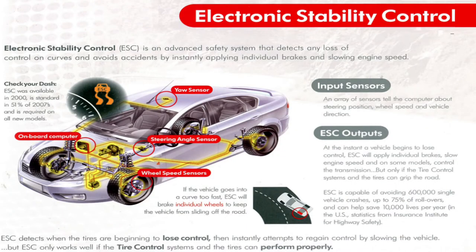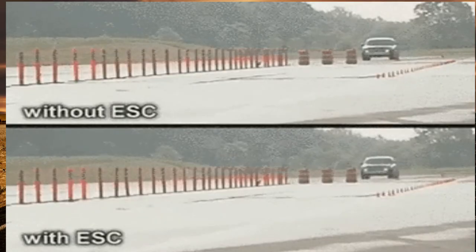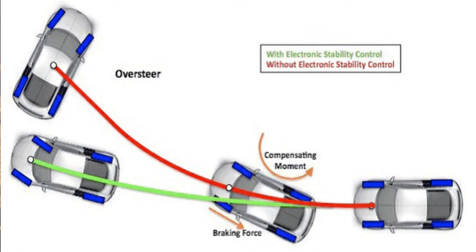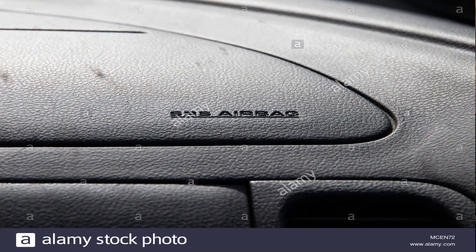Yet another feature is Electronic Stability Control — ESC — also referred to as Electronic Stability Program (ESP) or Dynamic Stability Control (DSC). This computerized technology improves a vehicle's stability by detecting and reducing skidding. When ESC detects loss of steering control, it automatically applies the brakes to help the driver steer where intended. Braking is applied individually to specific wheels — such as the outer front wheel to counter oversteer, or the inner rear wheel to counter understeer. Some ESC systems also reduce engine power until control is regained.